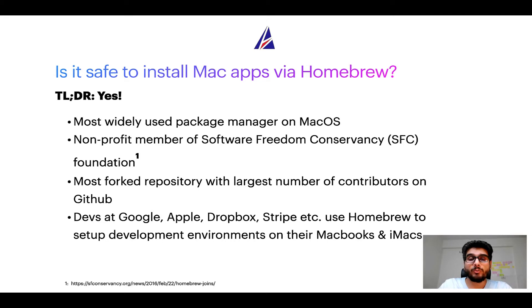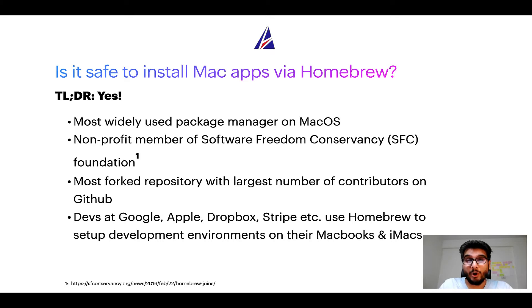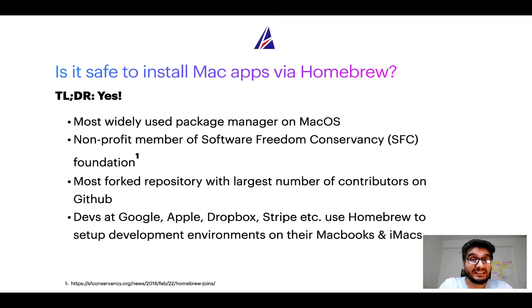Many other open source projects like Git, Busybox, Samba, and Wine are all part of this Software Freedom Conservancy organization. Also, you might be surprised to know that Homebrew is the most forked project on GitHub and it has the largest number of contributors on its GitHub repository.